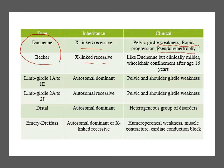Limb-girdle muscular dystrophies are either autosomal dominant or recessive with many subtypes affecting pelvic and shoulder girdles. There are distal muscular dystrophies which are autosomal dominant. Emery-Dreifuss can be autosomal dominant or X-linked recessive — its characteristic feature is contractures, especially elbow contractures, and patients have characteristic cardiac conduction block. Whenever you suspect Emery-Dreifuss, you should screen for cardiac conduction abnormalities.